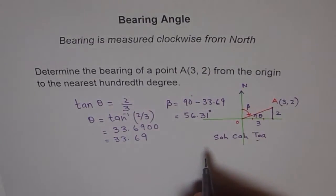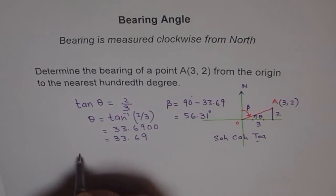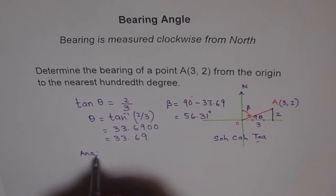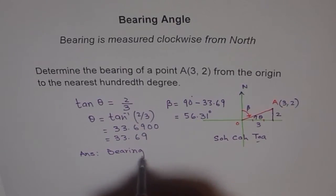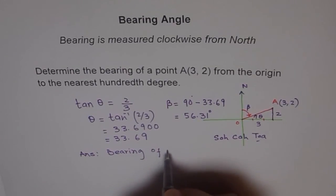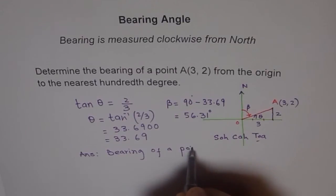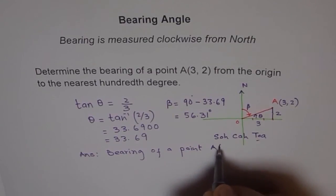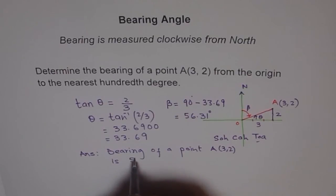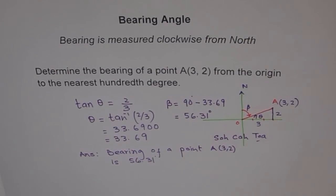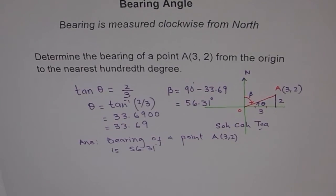So that's our answer. So we say bearing of the point is, we'll write down the answer, as bearing of point A(3,2) is 56.31 degrees. Perfect. That's the answer. I hope you understand the method and you understand the term bearing angle. Thank you.